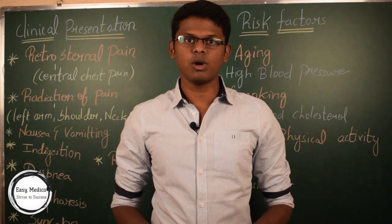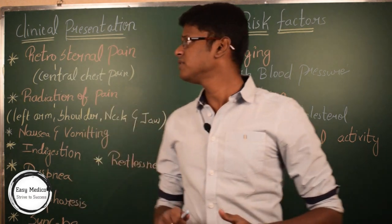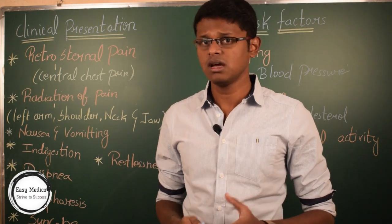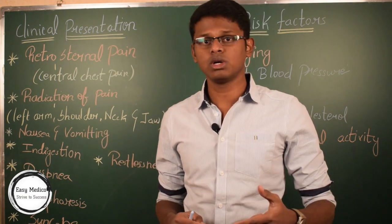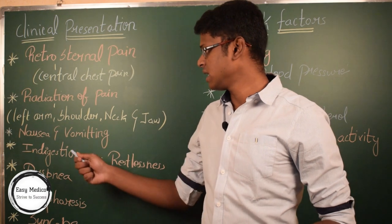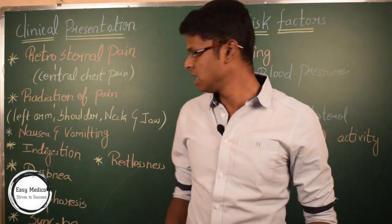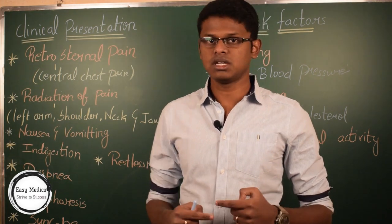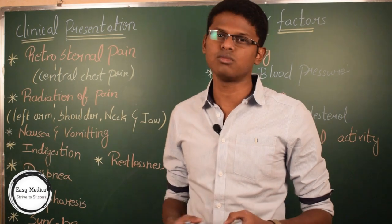Now let's discuss the clinical presentation and risk factors of acute coronary syndrome and myocardial infarction. The clinical presentations include retrosternal pain, which is a central chest pain with a crushing sensation. This pain gets radiated to the person's left arm, shoulder, neck, and jaw. They also tend to have nausea, vomiting, indigestion, dyspnea which is shortness of breath, diaphoresis which is sudden heavy sweating, syncope which is unusual fatigue, and restlessness.